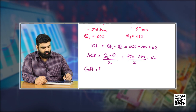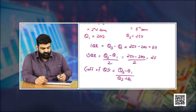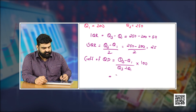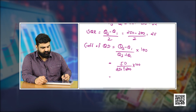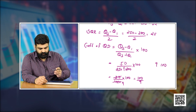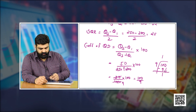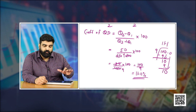Now let us find the coefficient of quartile deviation. The formula is: (Q3 − Q1) / (Q3 + Q1) × 100. We have Q3 − Q1 = 50 and Q3 + Q1 = 250 + 200 = 450. So coefficient = 50/450 × 100 = 100/9 = 11.11 percent.